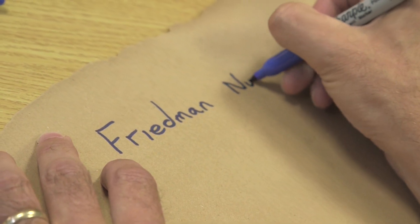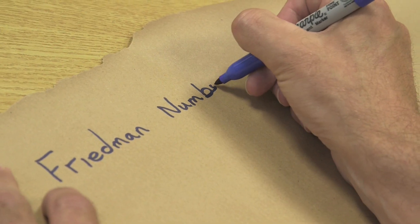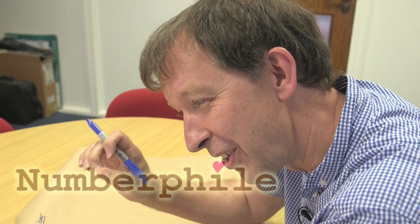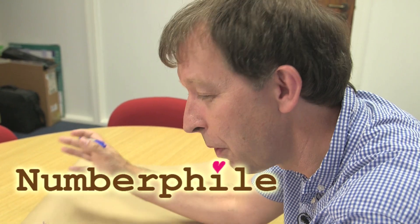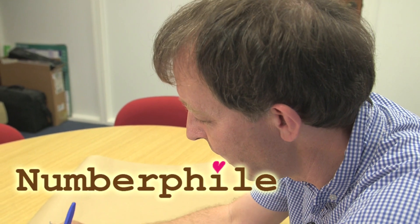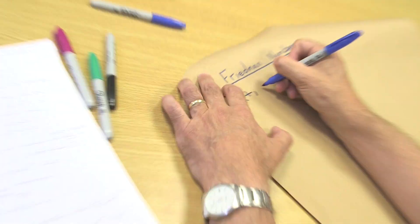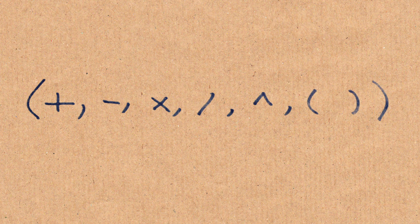These are called Friedman numbers. It can be written in a non-trivial way, just using the digits itself together with any combination of your usual mathematical signatures: plus, minus, times, divide. You can even raise things to a power and you can use some combination of brackets if necessary.